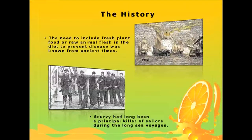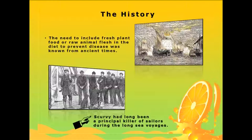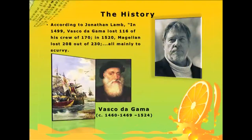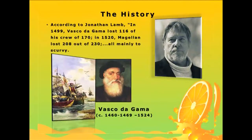The history of vitamin C: it was known from time immemorial that fresh fruits and vegetables are required in the diet to maintain good health. Scurvy has been a potential killer of sailors and pirates during long sea voyages. According to Jonathan Lamb, in 1499 Vasco da Gama lost 116 of his 170 crew members, and in 1520 Magellan lost 208 out of his 230 crew members — all to scurvy.